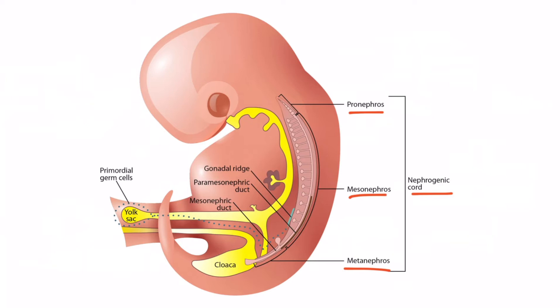We discuss the nephrogenic cord and its importance in renal development in more detail in the renal chapter. For now, let's turn our attention to the yolk sac, where we can see the primordial germ cells. These migrate from the wall of the yolk sac to a part of the mesonephros, which then forms the gonadal ridge — shown in blue right here. The primordial germ cells and underlying mesonephros at the gonadal ridge proliferate and together form the undifferentiated gonads.